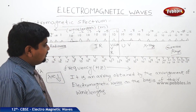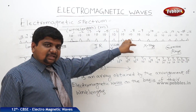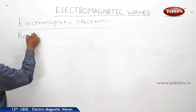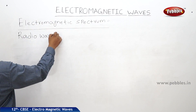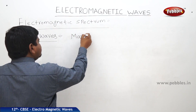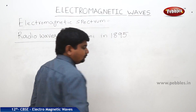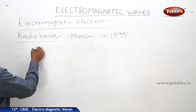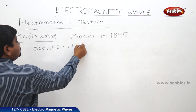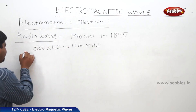The whole arrangement from gamma rays to long waves, in order of increasing or decreasing wavelength, is called the electromagnetic spectrum. Now we will discuss the production and uses of these waves. First is radio waves, first discovered by Marconi in 1895. The range of radio waves is from 500 kilohertz to 1000 megahertz. Among these, amplitude modulation and frequency modulation are present.